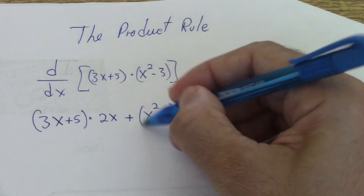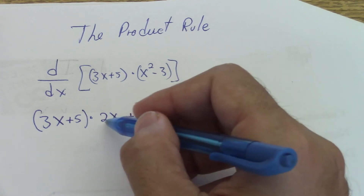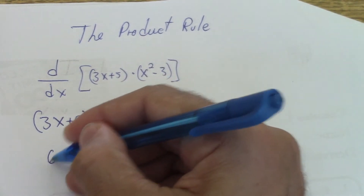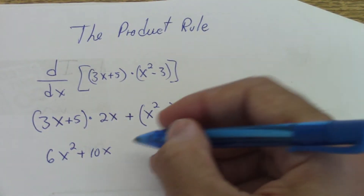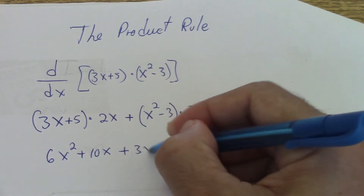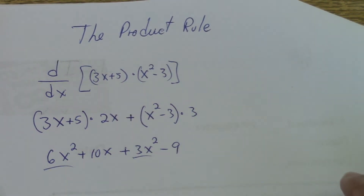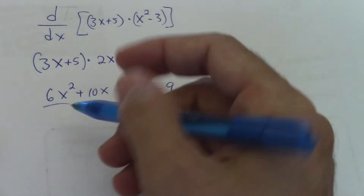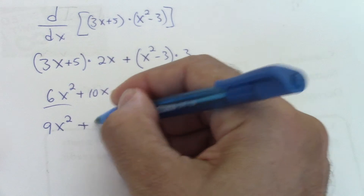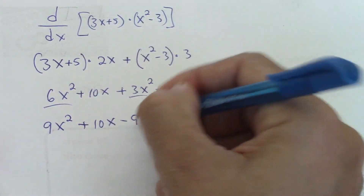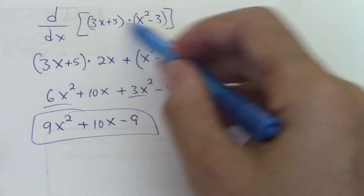The same thing — we need to write a parenthesis. And then we can work a little bit here: 2x times 3x will be 6x squared, plus 10x, plus 3x squared minus 9. Then we just identify the like terms and work with them: 6 plus 3 would be 9x squared plus 10x minus 9. So that would be the answer — that would be d/dx of this one.